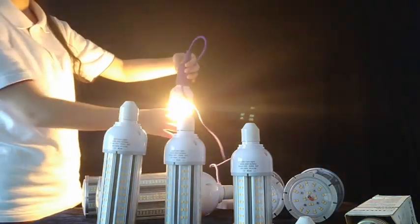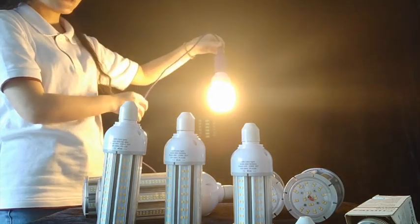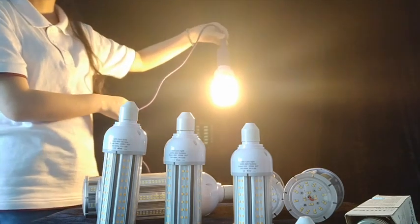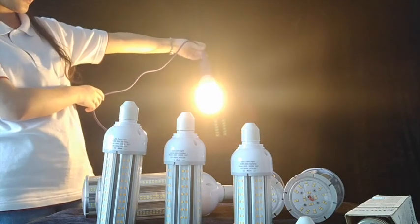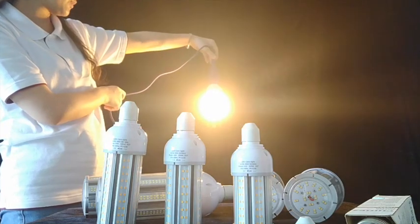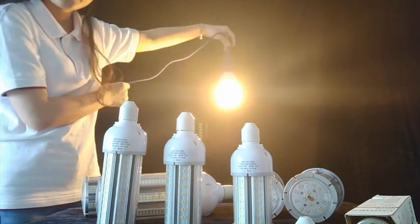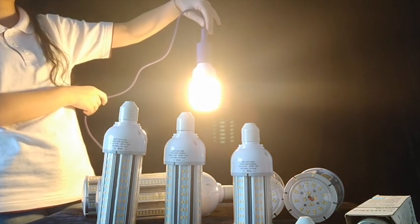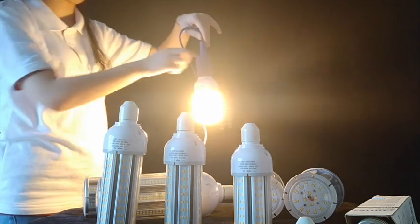Here you can see, this is 2200 Kelvin. It looks a little yellow. This is 12 wattage, 2200 Kelvin, and lumen can reach to 1800 lumen.